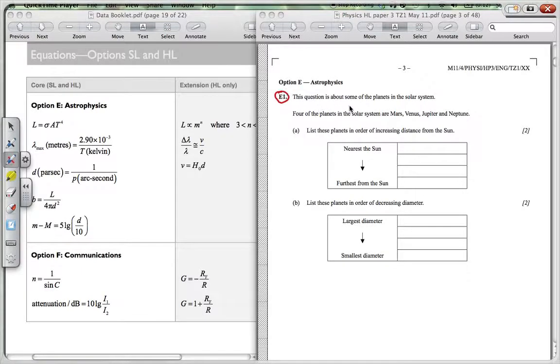Question E1. This question is about some of the planets in the solar system. You have to have quite a knowledge of the solar system, the basic facts of the solar system. So four of the planets in the solar system are Mars, Venus, Jupiter and Neptune.